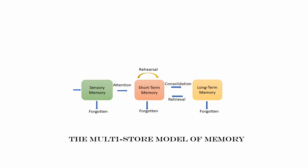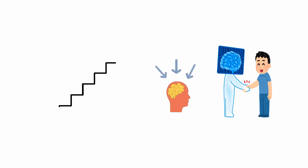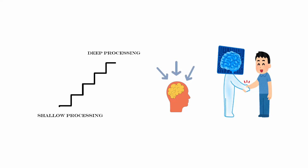However, Craig and Lockhart's model focuses on how information is processed rather than where it is stored. Craig and Lockhart proposed that memory can be better explained by levels of processing, where incoming information is analyzed in stages ranging from shallow sensory processing to deeper, more abstract and semantic processing.